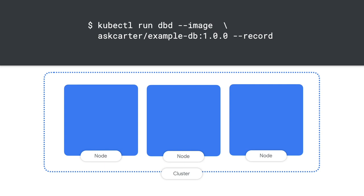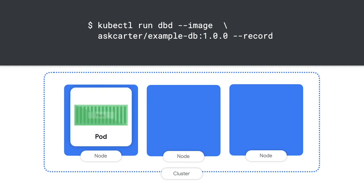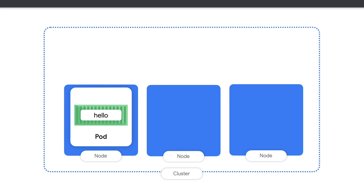Since we're using the command line, we can use a handy tool called kubectl to help interact with the Kubernetes API. We'll go into kubectl in more detail later, but we're keeping it simple. There are a lot of different ways to pronounce the name of this tool, so whatever works for you. Anyway, this command is actually going to create a Kubernetes API object called a deployment.